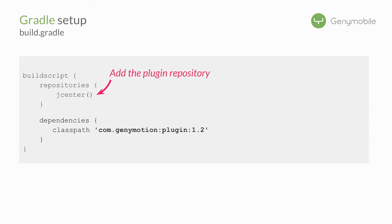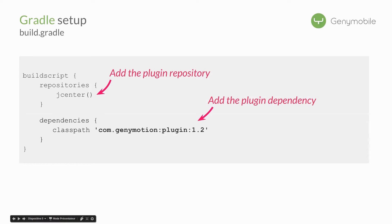You may already have jcenter in your build script repositories, but if not, you can just add this line — jcenter — and it is done. Then on the dependencies block, you can add the classpath with com.genimotion.plugin, which is the GeniMotion plugin, and version 1.2, which is the most up-to-date. In the future, you will also be able to run tests on virtual devices in the cloud. So as you can see, in two lines you have almost added the GeniMotion plugin to your project.